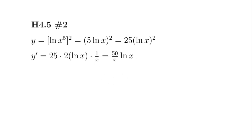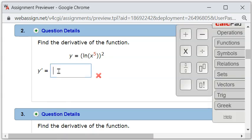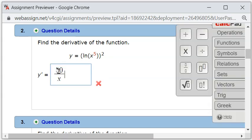So let's type it in. We got 50 over x times natural log of x. Let's check the answer.